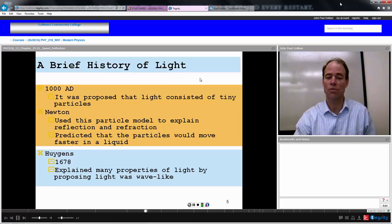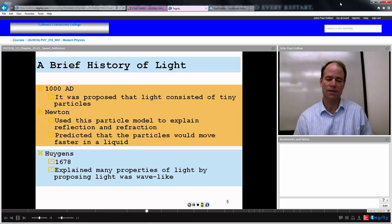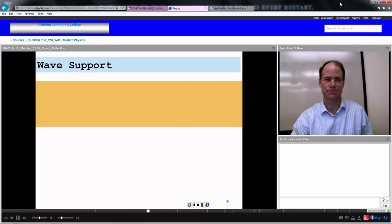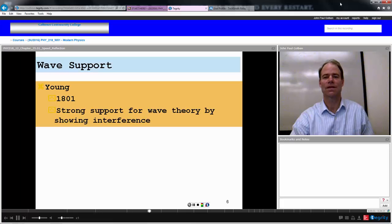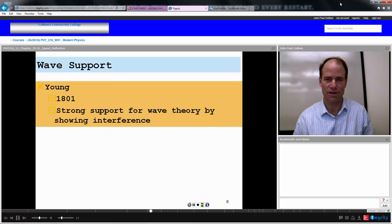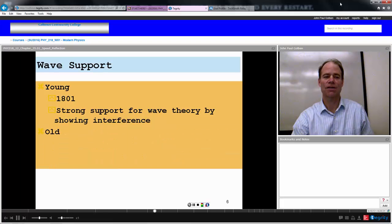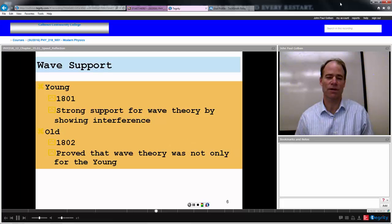Huygens, in 1678 assumed a wave model of light and was able to explain many of the properties of light using this wave-like nature of light. Young showed in 1801 strong support for this wave theory by showing that light exhibited interference. Very, very good because that's something that you would not see with particles, interference. Particles couldn't interfere in the way that he was showing the constructive and destructive interference.